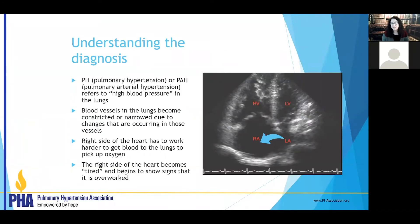One of our best non-invasive tests to sort this out is the echocardiogram. It shows us how blood is flowing through the heart, and if it's backing up through the tricuspid valve, we can estimate pressures in your lungs. The echocardiogram also shows how well the heart is tolerating those high pressures — is the right heart enlarged, is it working well, is there fluid around it? That tells us how aggressive we need to be to get you feeling better.